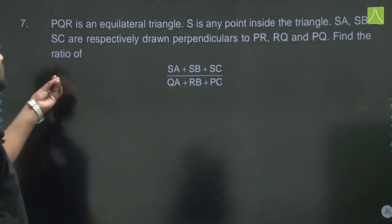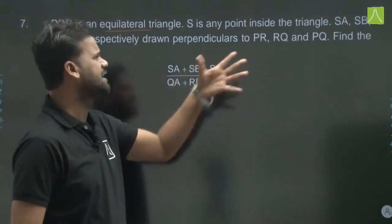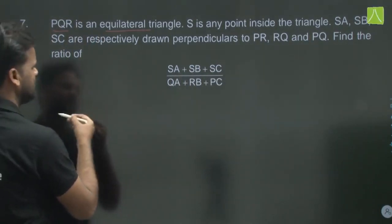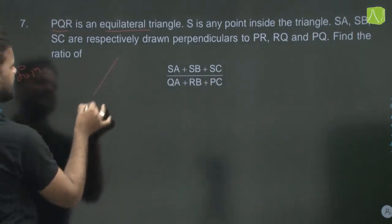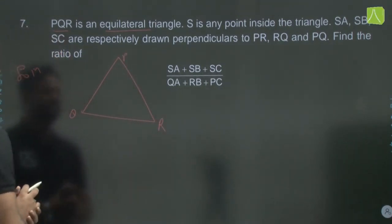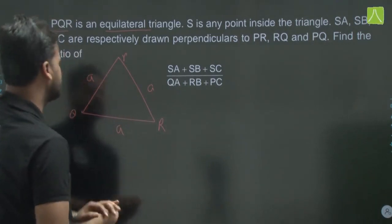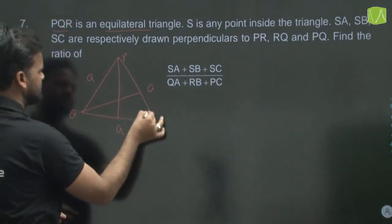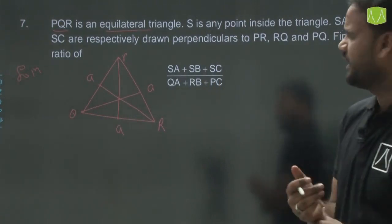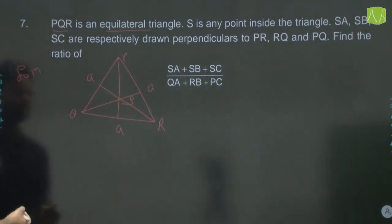Next question: PQR is an equilateral triangle with side a. S is any point inside the triangle. SA, SB, SC are perpendiculars drawn to PR, QR, and PQ respectively. In an equilateral triangle, the perpendicular and median coincide, so S is the centroid.